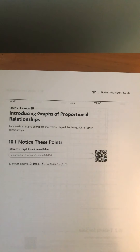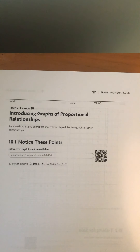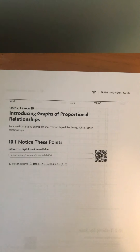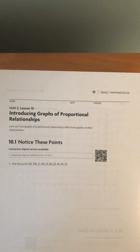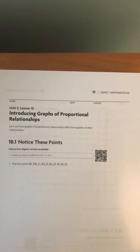We are on Unit 2 Lesson 10. We have talked about proportional relationships — we've looked at tables, made equations in the form y equals kx, and in the table we need a constant ratio between the two quantities when we divide y over x. Today we're introducing graphs of proportional relationships, another way to see a relationship between two quantities and determine if it is proportional.